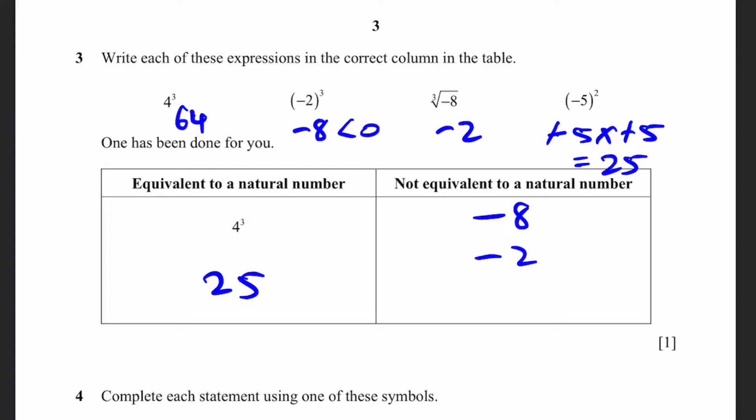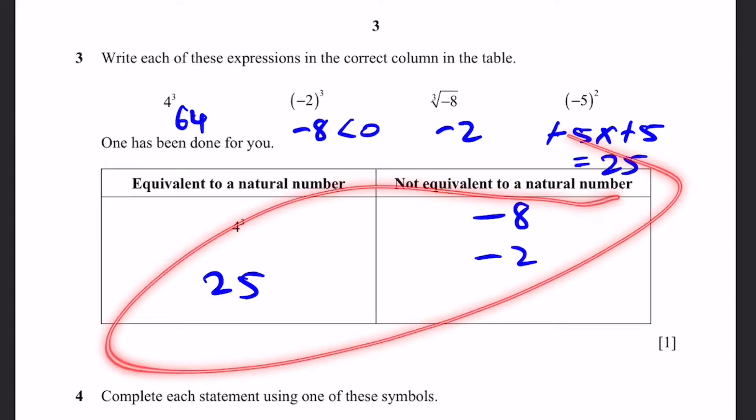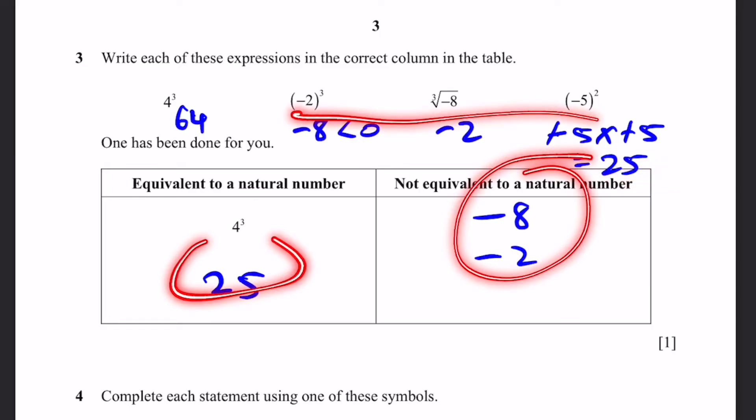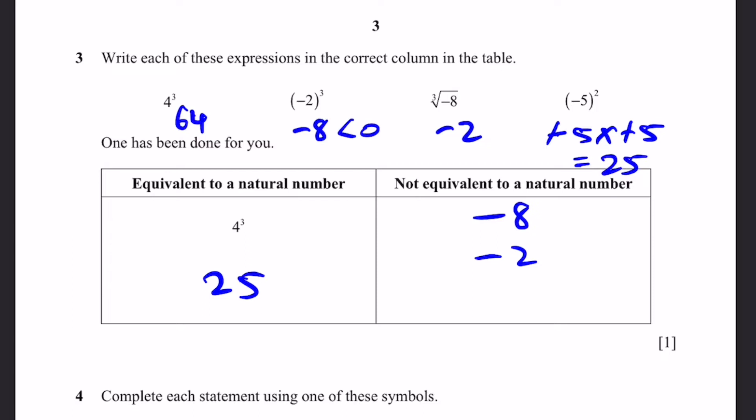Minus 5 the whole squared. Minus 5 times minus 5. Negative and negative become positive, so it's 25. And that's a natural number. Hold up, this is not the answer yet. Do you notice one thing which I've done wrong? You can't just write the final answer of the calculation. We need to write the exact expressions in the table, otherwise we won't get the one mark. So instead of writing 25 minus 8 minus 2, we have to write minus 5 the whole squared, and then minus 2 the whole cubed, cube root of minus 8. That's the answer.